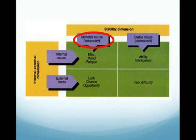When a learner experiences success, attributions to stable causes lead to positive expectations for success in the future. In the face of failure, however, attributions to stable causes can result in low expectations for the future.